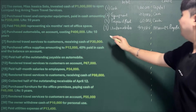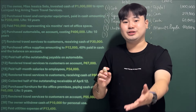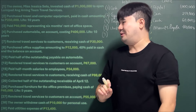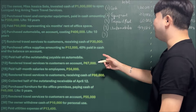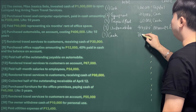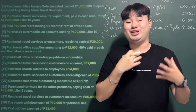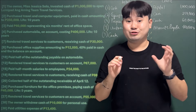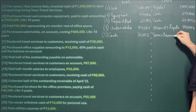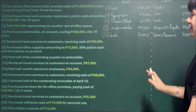April 7: Rendered travel services to customers and received cash of 30,000 — for example, a trip to Palawan. Since we received cash, we debit Cash for 30,000. Because we have already rendered the service and earned revenue, we credit Service Revenue for 30,000.